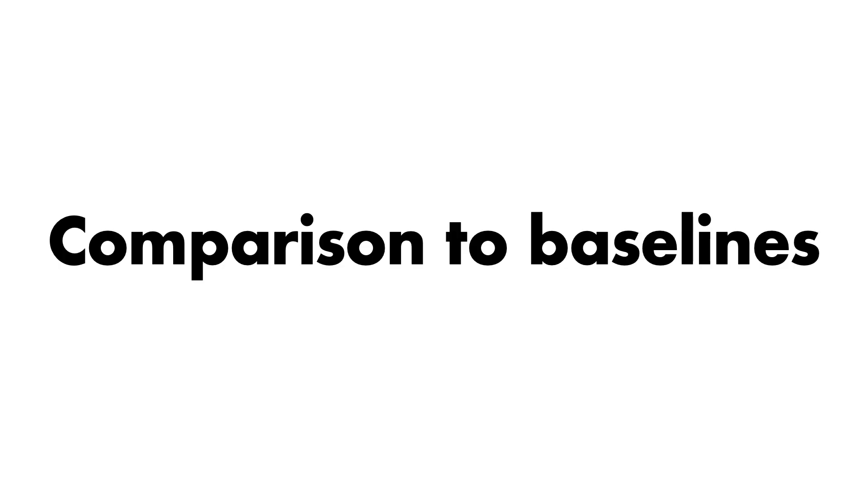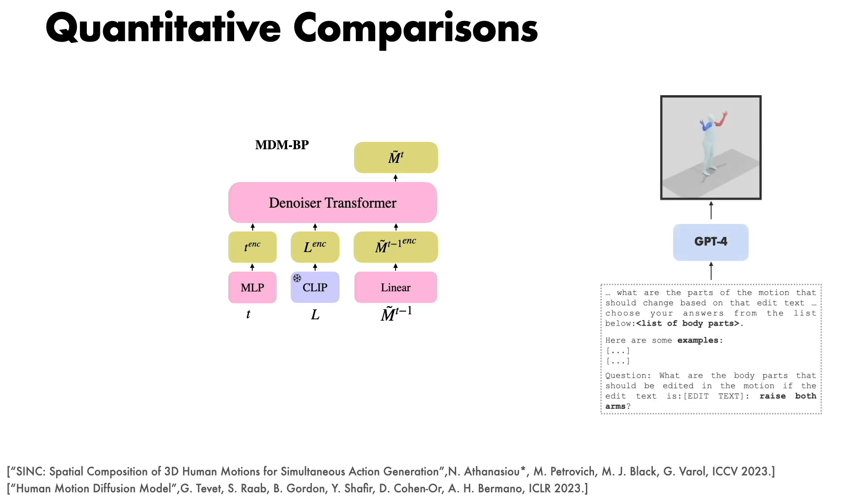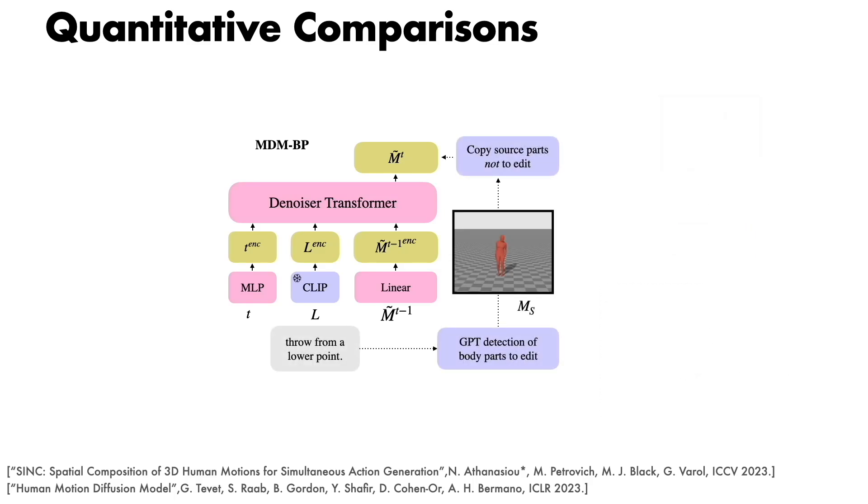Since MotionFix is the first benchmark of text-based 3D human motion editing, we introduce several baselines to compare against and show the need for paired data. We train MDM, a text-to-motion model on HumanML3D dataset, and then use the approach proposed in Sync to collect labels based on the edit text of which body parts should be edited. Then we use body part labels and generate with MDM only the parts that should be edited while copying the rest from the source motion.